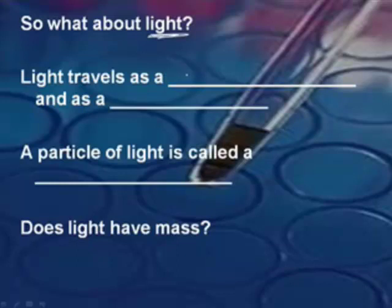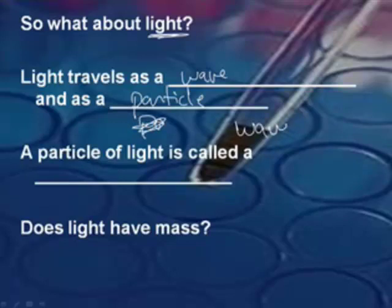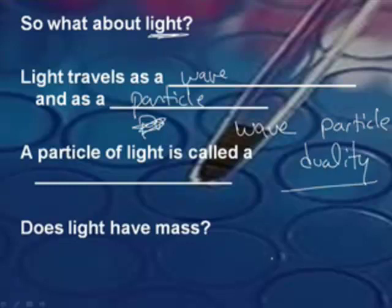All right, so now let's go back to light. Let's talk about light for a minute. So matter behaves like a particle, and then he said light travels as a wave, but also as a particle. We call that wave-particle duality. So is light a wave or a particle? Yes. Wait a second, is light a wave or a particle? Yes. Who's on first? A particle of light then is called a photon.